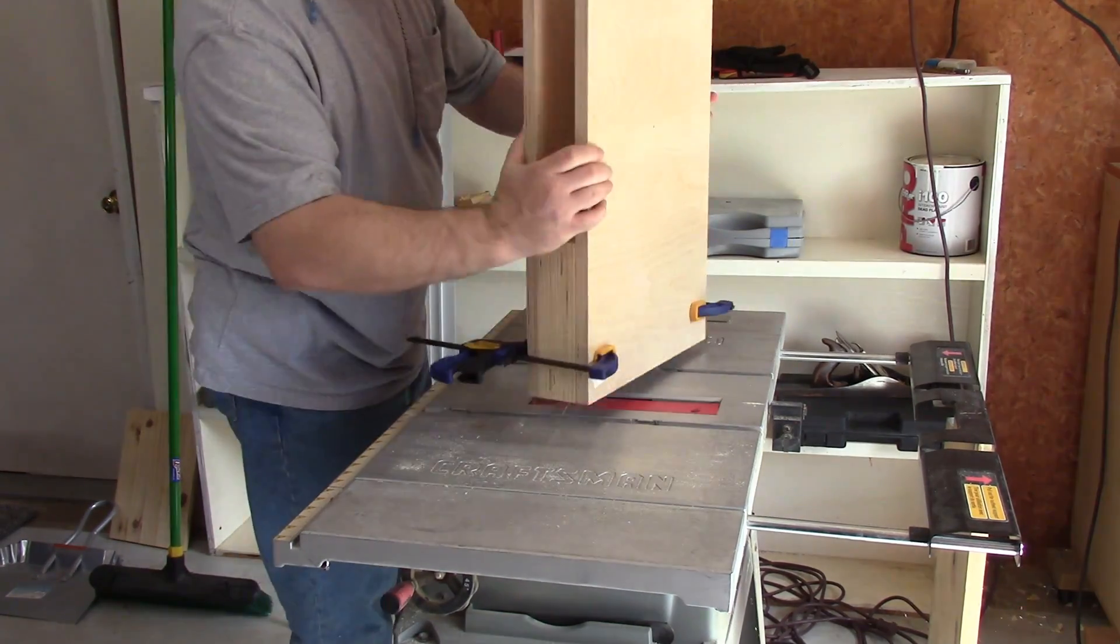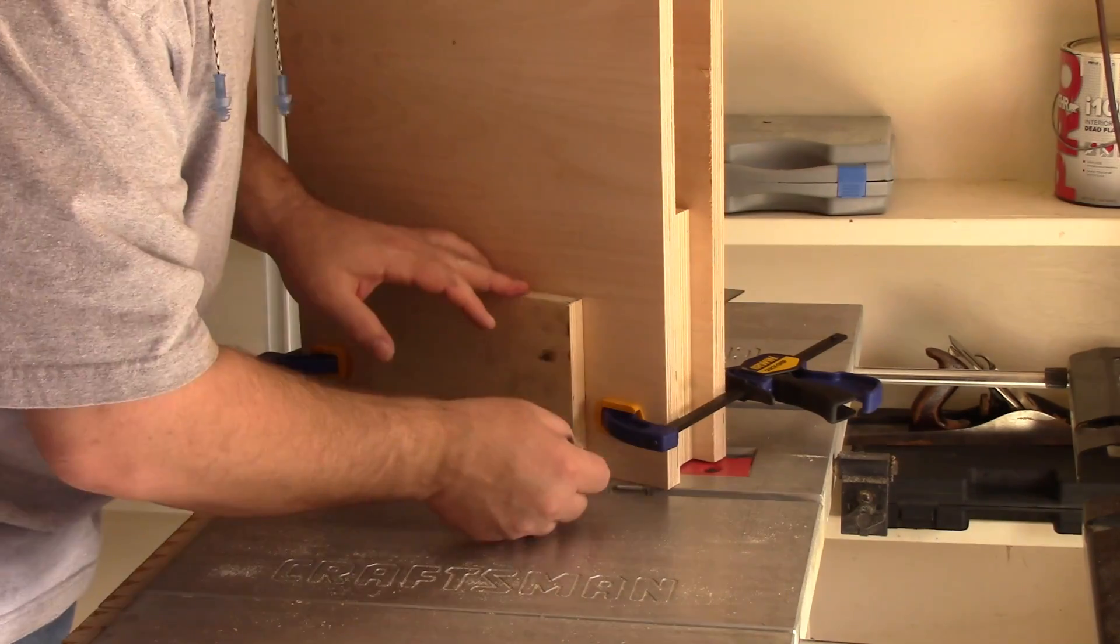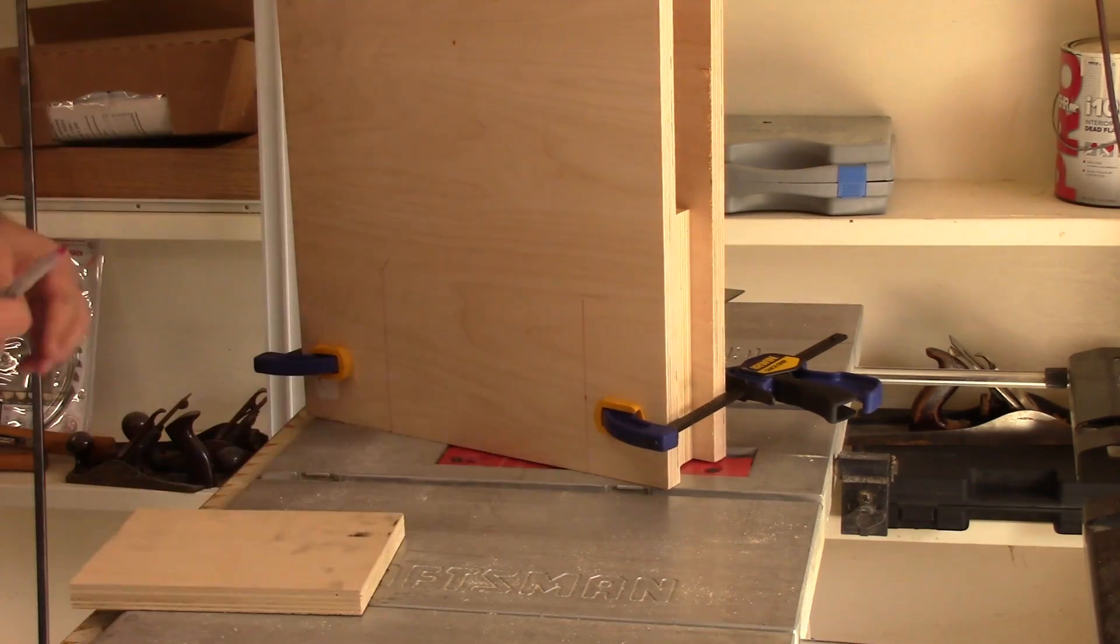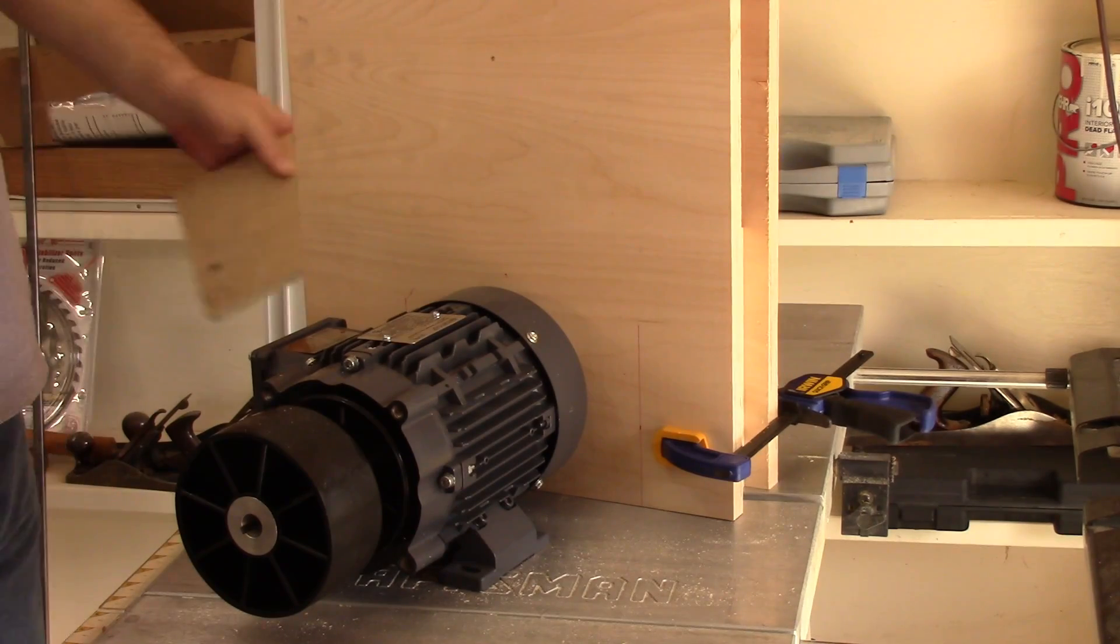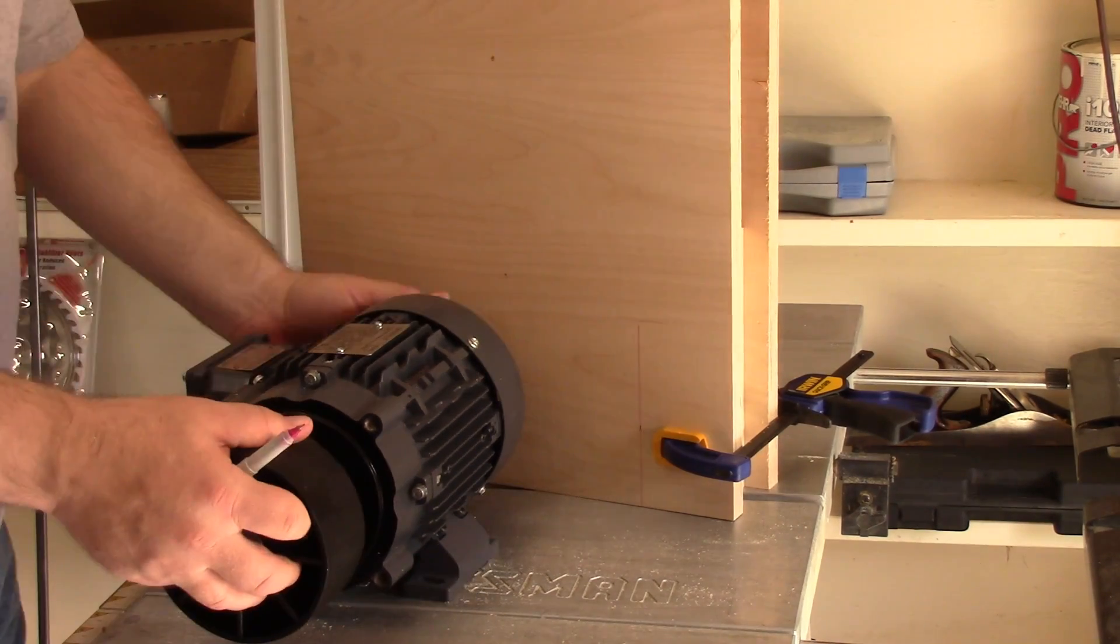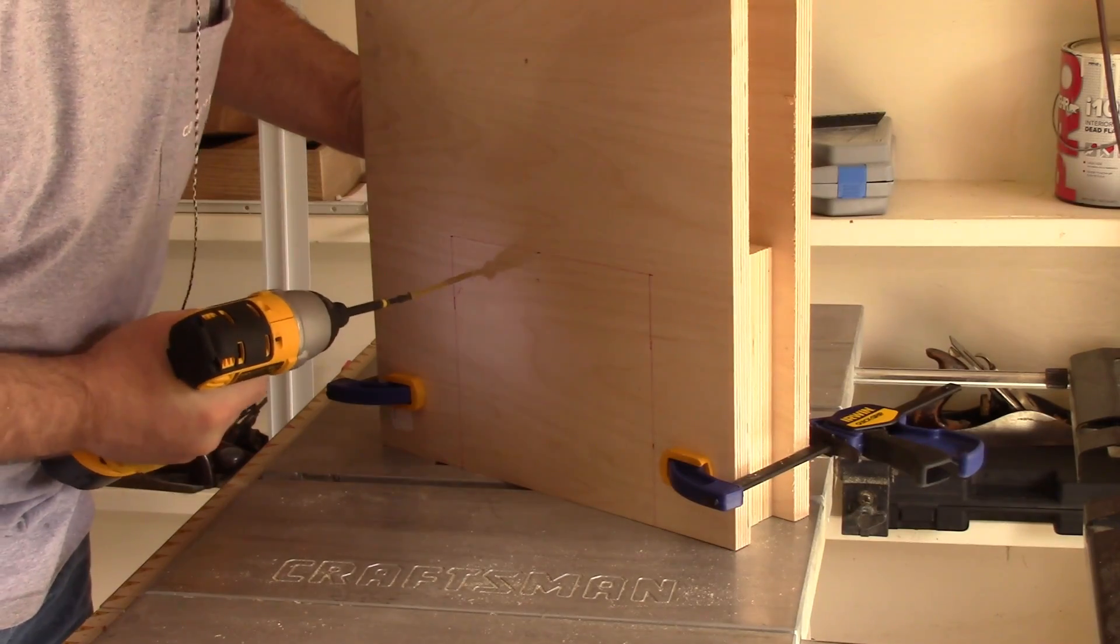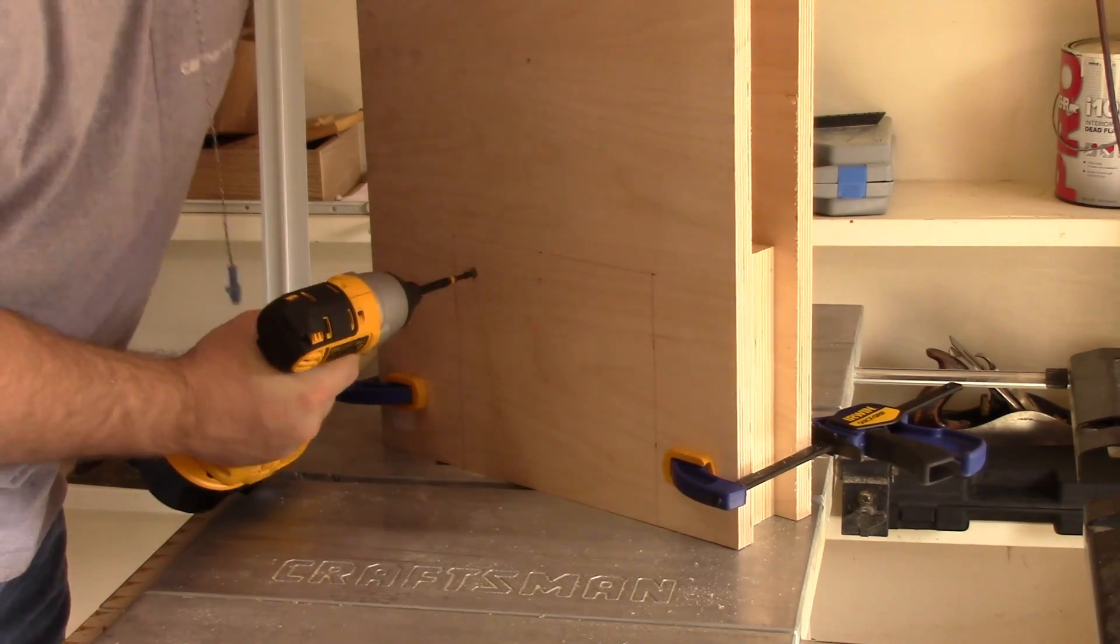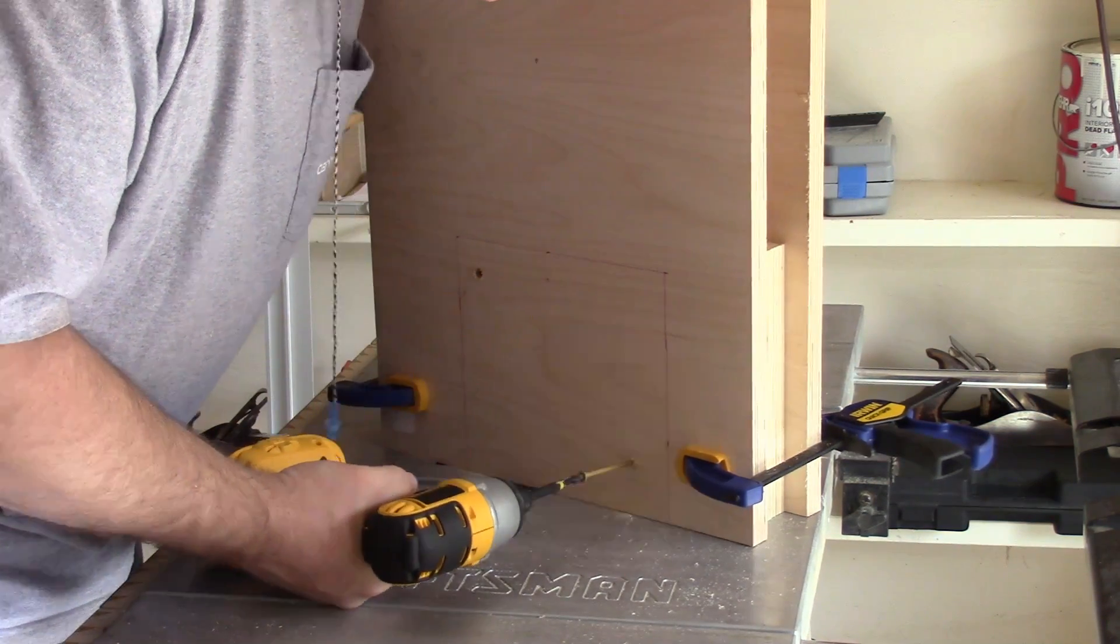Now here I'm getting ready to mark the opening for my motor. The size of the opening will vary depending upon the motor used. I ended up making the opening about a half an inch taller than the motor was. I'm adding a couple of screws to hold the layers of plywood together while I cut out the motor's opening.